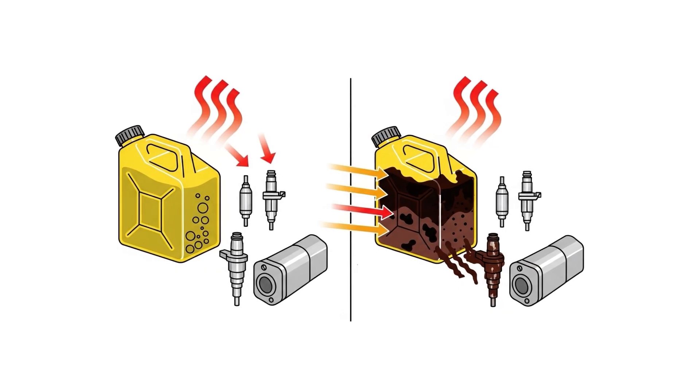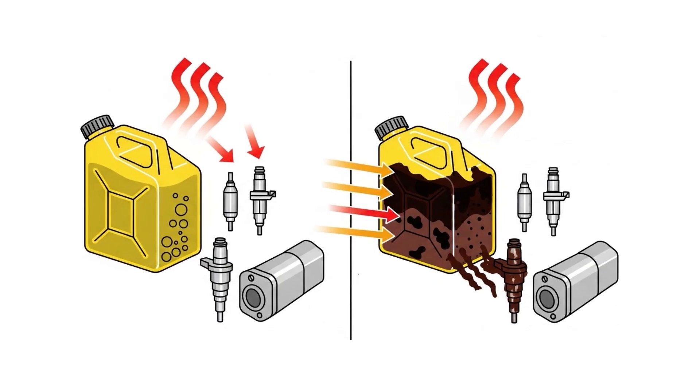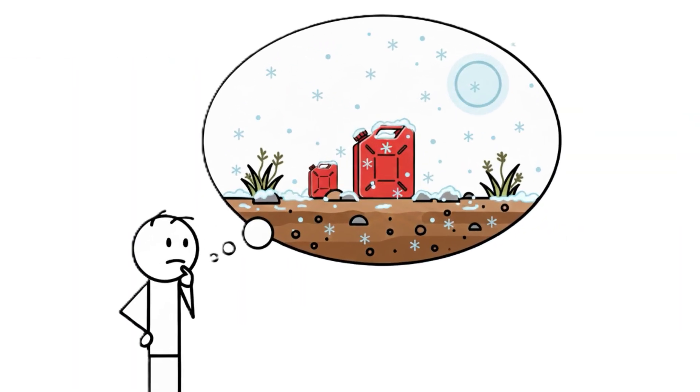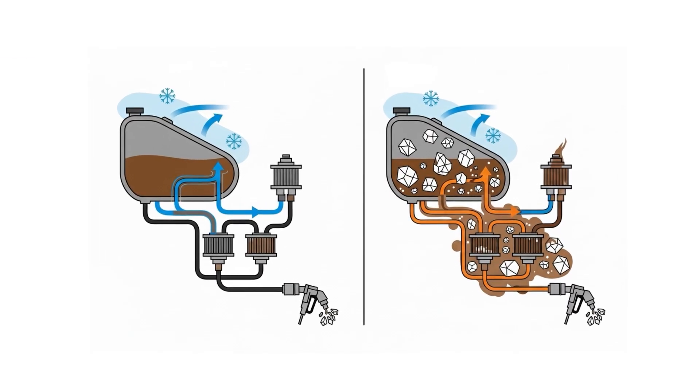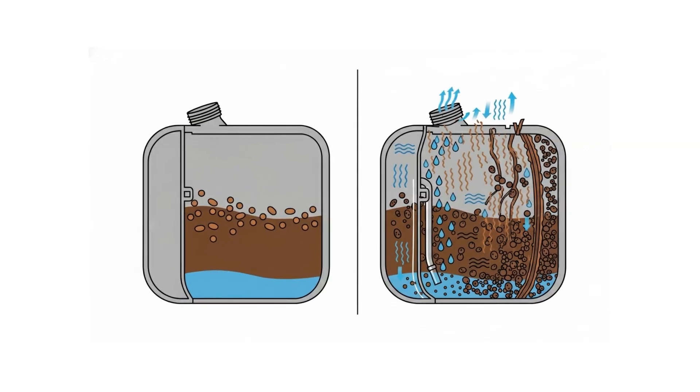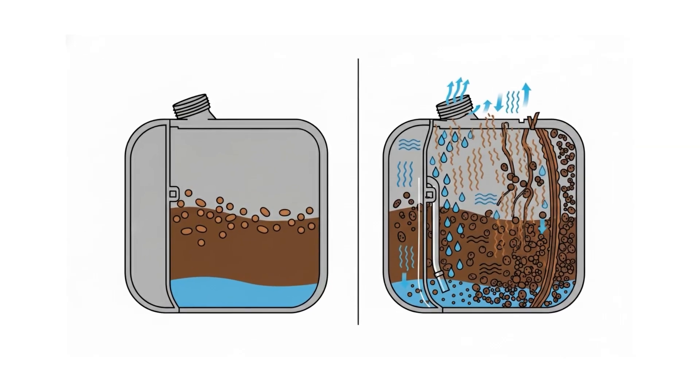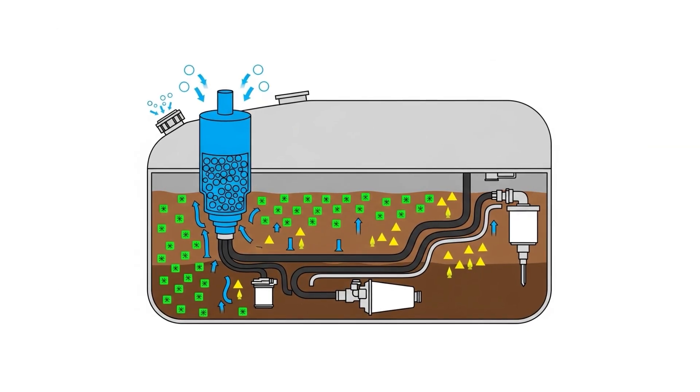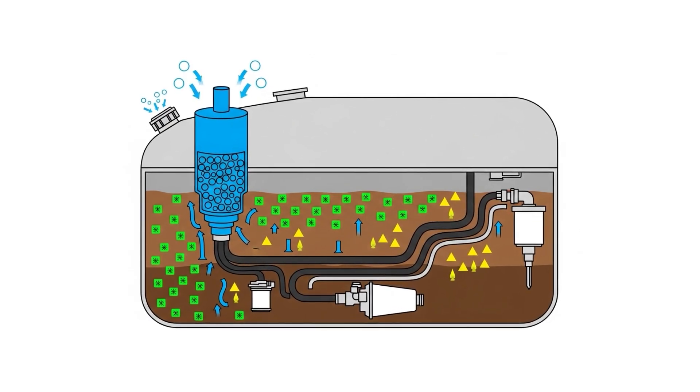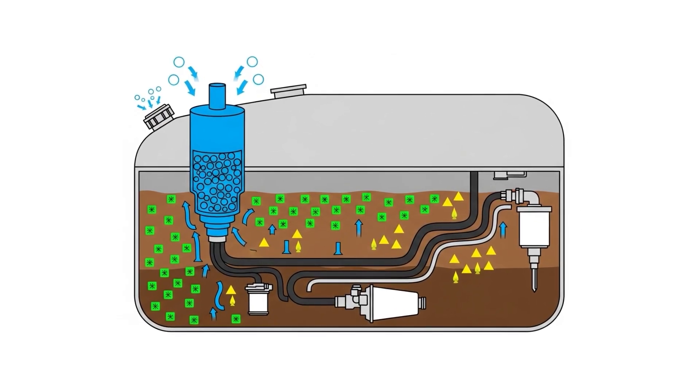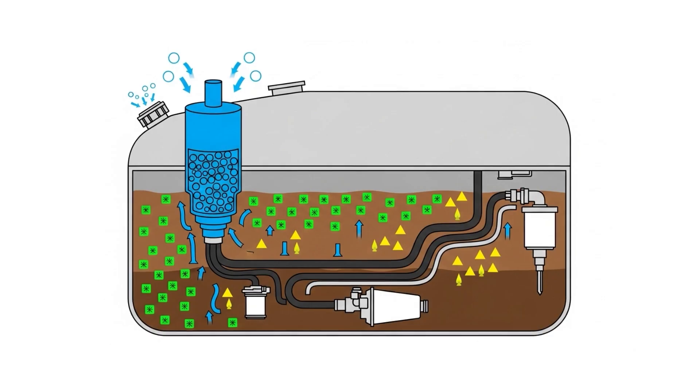If you let fuel sit in high heat, it breaks down and forms varnish and gum, which coat your injectors and pumps. When the temperature drops, wax crystals form and gel up your fuel. If your tank isn't sealed well, humid air gets in and makes things even worse. The pros always use silica gel vent cartridges to keep moisture out and treat their tanks with biocides and stabilizers before winter.